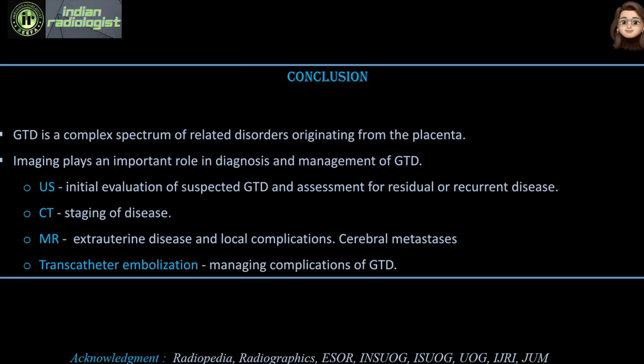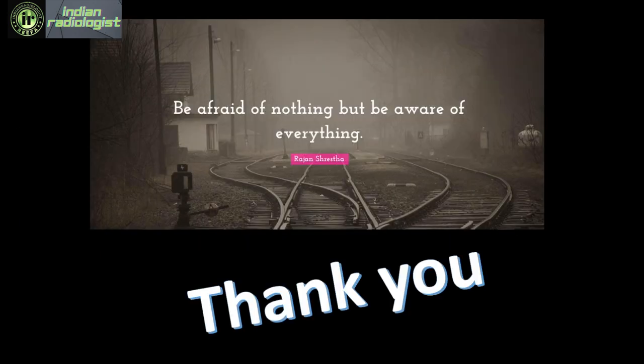To conclude, gestational trophoblastic disease is a complex spectrum of disorders. It does not have classical imaging findings unless the snowstorm appearance or very classical cystic changes are present, so we must keep our eyes and mind open. Ultrasound is the initial evaluation and is also used to assess residual or recurrent disease. CT is used for staging; MRI is good for local extent and cerebral metastasis. Embolization is done to manage complications such as AVMs. Being aware of the spectrum of appearances allows us to pick this up at an earlier stage and provide better patient care.